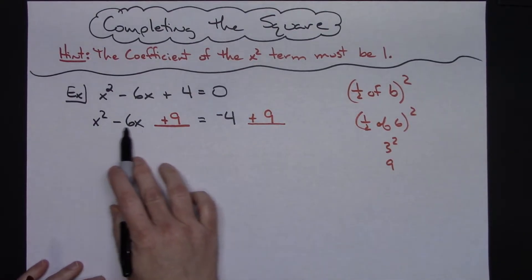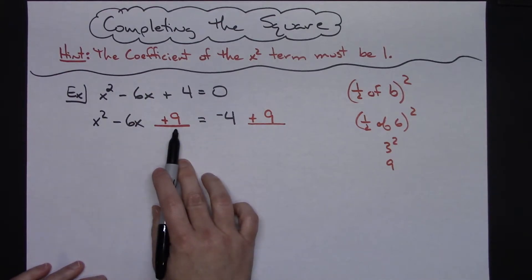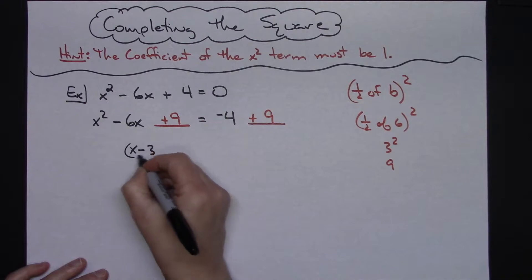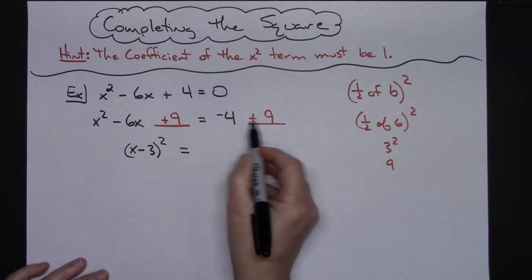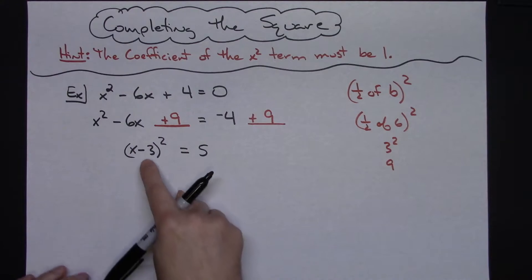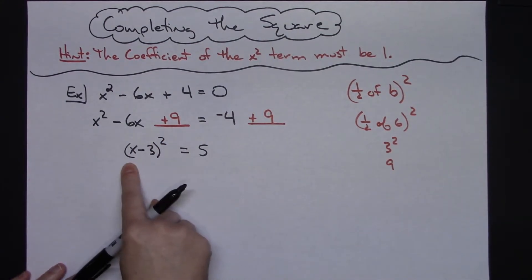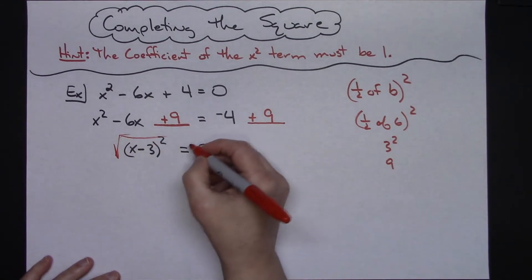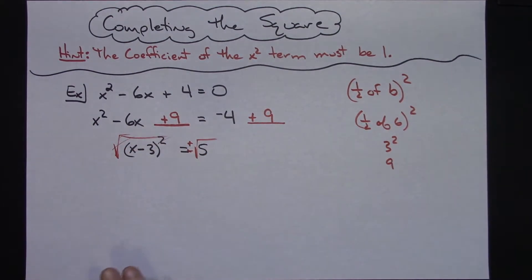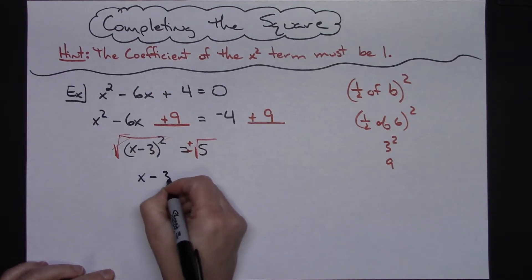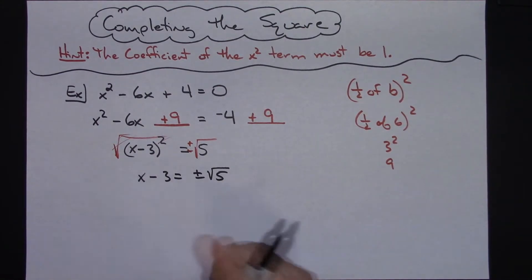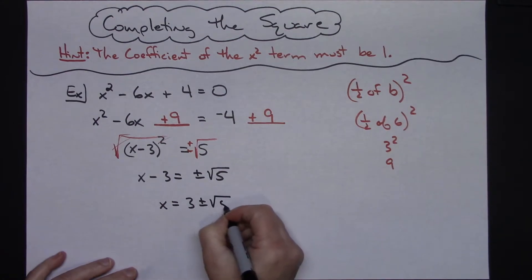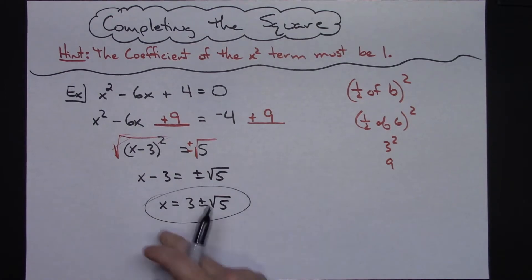At that point I have completed the square. On the left side this is a perfect square trinomial, and with the minus sign it factors into x minus 3 squared. On the right-hand side, negative 4 plus 9 gives me 5. Now I can take the square root of both sides — x minus 3 equals plus or minus the square root of 5. Then I add 3 to both sides, so x equals 3 plus or minus square root of 5. Two possible answers — if you need decimals, you can convert from there.